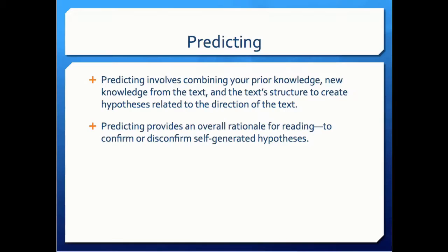Predicting in Reciprocal Teaching involves combining your prior knowledge, new knowledge from the text, and the text's structure to create hypotheses related to the direction of the text. Predicting provides an overall rationale for reading to confirm or disconfirm self-generated hypotheses.